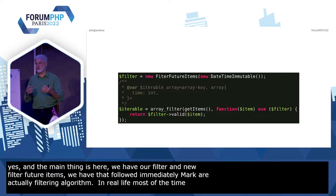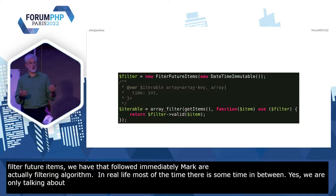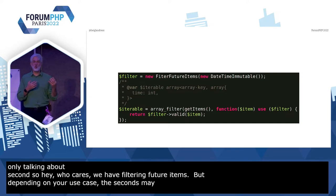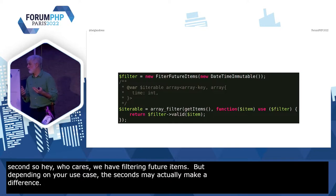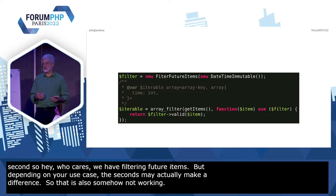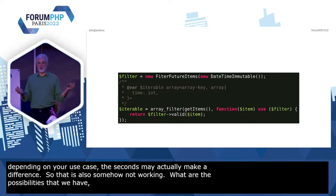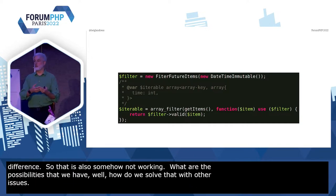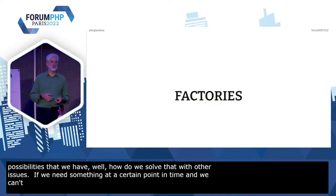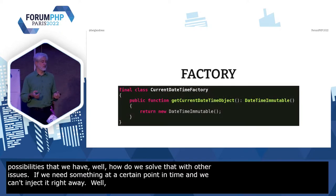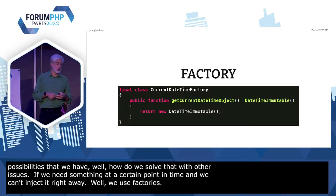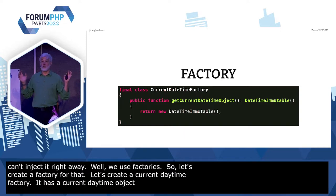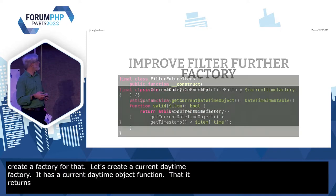We are filtering future items. But depending on your use case, those seconds might actually make the difference. So that also somehow doesn't work. How do we solve that in other issues? If we need something at a certain point in time but we can't inject it right away, we are using factories. So let's create a factory for that — a CurrentDateTimeFactory. It has a `getCurrentDateTimeObject` function and it returns a new DateTimeImmutable object.